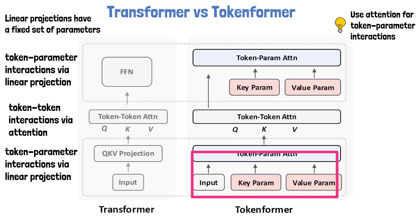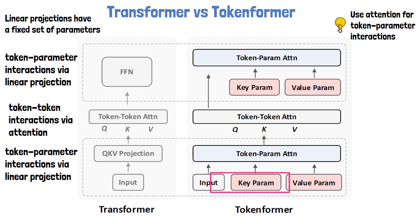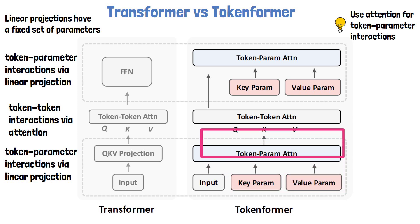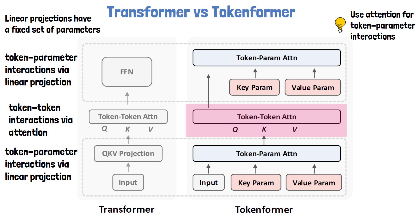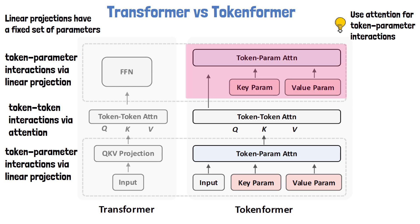First, to calculate the inputs for the self-attention block — the Q, K, and V matrices — we feed the input tokens into a new component called token-parameter attention. In addition to the input tokens, we also pass parameters to this block. The input sequence represents the query part, and there are parameters that represent the key and value parts. Then we have the same self-attention component as before, but in order to prepare the output for the next layer, we replace the feed-forward network with another token-parameter attention block, where the output from the self-attention block is used as the query and we again have different parameters for the key and value matrices.